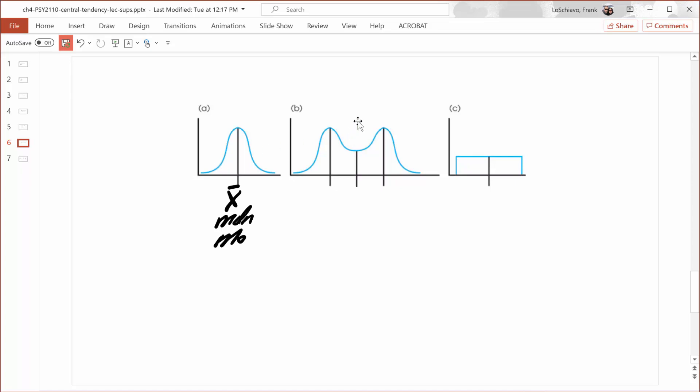This distribution is bimodal. I pay the most attention to the mode at first because I'm looking for peaks in the distribution. Here I see two distinct peaks, one right here and one right here. So I know there's a mode right here and a mode right here. Identifying the mean and the median are just as easy because in any symmetrical distribution, they're right in the middle.